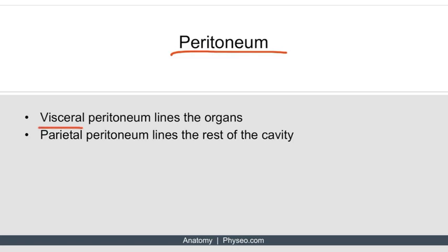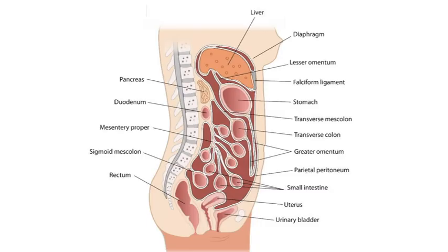There are two components of the peritoneum: the visceral peritoneum, which lines the organs, and the parietal peritoneum, which lines the rest of the cavity. This image shows a sagittal view of the peritoneum of the abdominal cavity. The liver and intestines are all covered by visceral peritoneum, while everything else in this cavity is covered by parietal peritoneum.